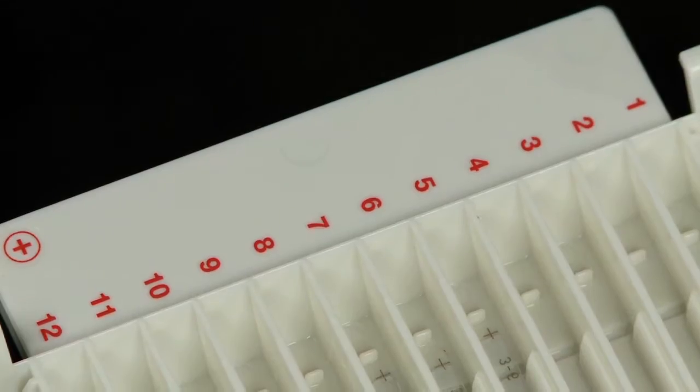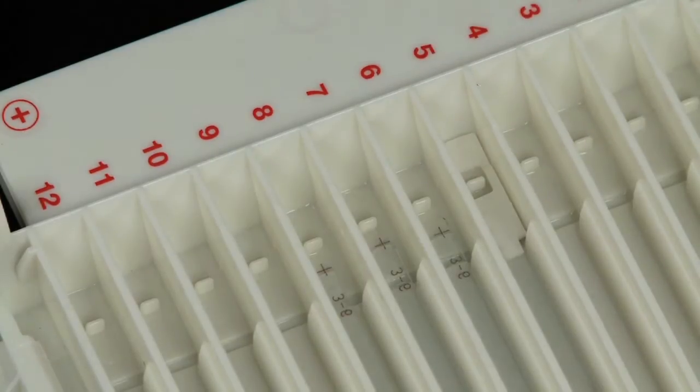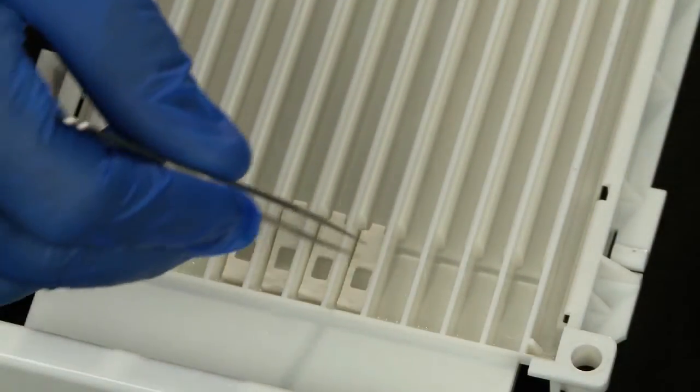At this point, you can add electrode wicks if you choose. Pre-wet the wicks and place them at the ends of the tray on top of the IPG strip.